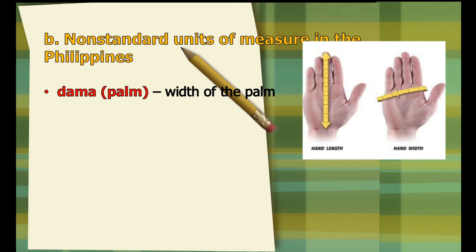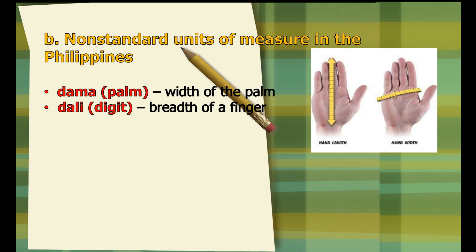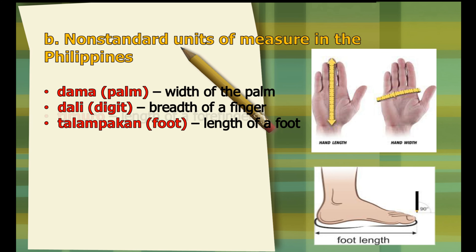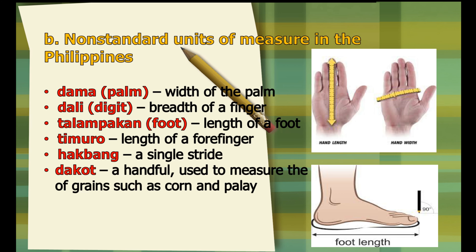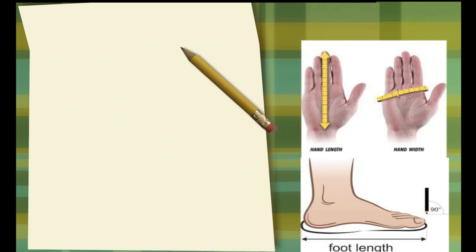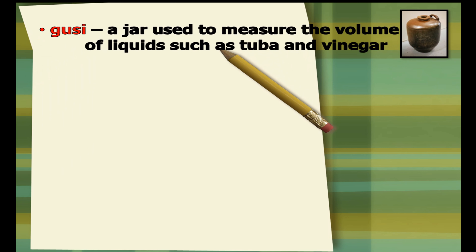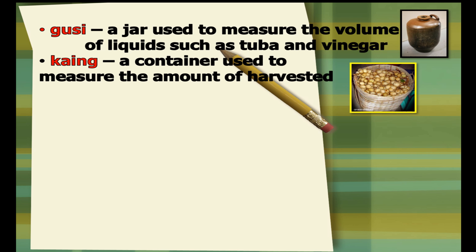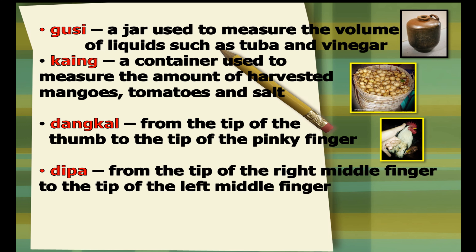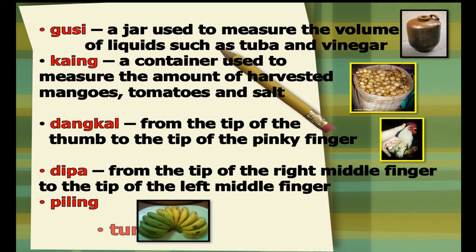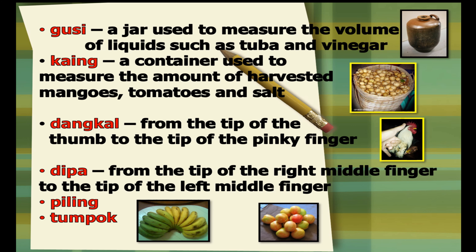The Filipino non-standard units include: dama or palm, the width of the palm; dali or digit, the breadth of the finger; talampakan or foot, the length of a foot; timuro, the length of the forefinger; hakbang, a single stride; dakot, a handful used to measure grains such as corn and palay; gusi, a jar used to measure volume of liquids such as tuba and vinegar; kaing, a container used to measure amounts of harvested fruits or vegetables like mangoes and tomatoes; dangkal, from the tip of the thumb to the tip of the middle finger; dipa, from the tip of the right middle finger to the tip of the left middle finger; and piling and tumpok, still seen in public markets.